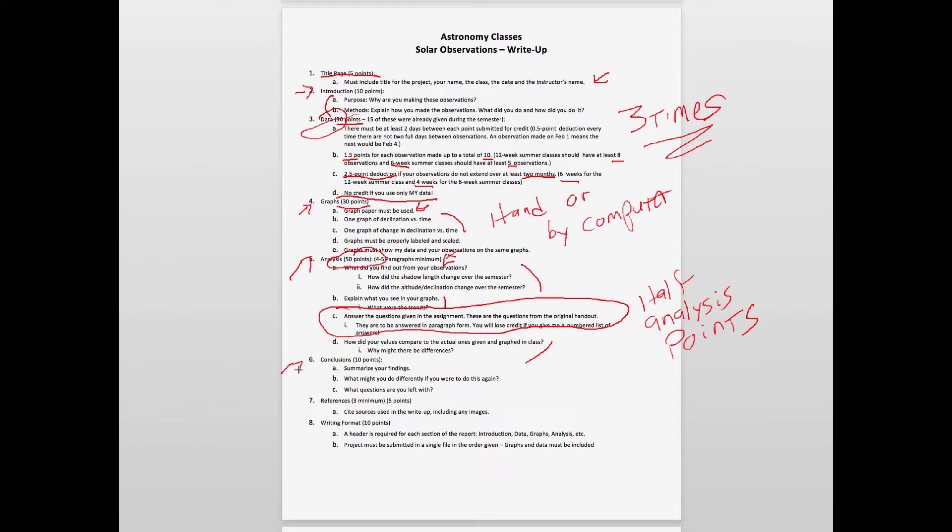Finally at the end you're going to want conclusions. Summarize your findings, what you might do differently, and what questions you're left with. Make sure you answer all of these. I have no questions is not acceptable. You've got to come up with something. References in terms of your analysis - if you had to use some external sources, I require that you use a minimum of three and cite those appropriately in the write-up where you use them, then give a works cited page at the end. That can include information and also images if you use images as part of your explanations.